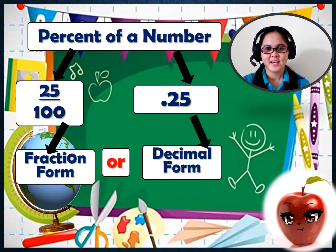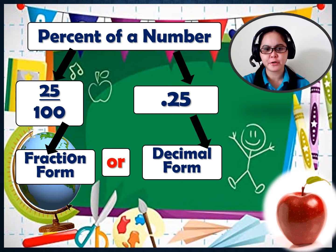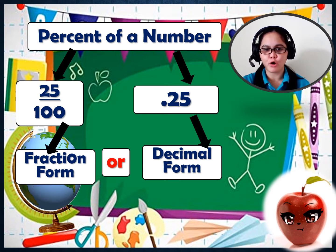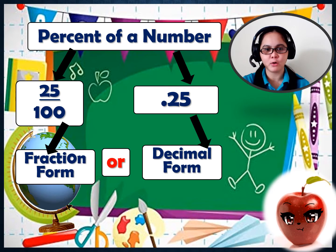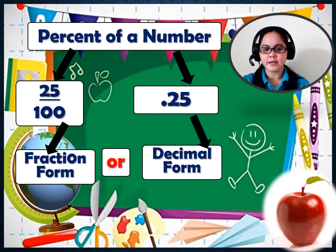In finding a percent of a number, we can use fraction form or decimal form. For example, 25% can be written as 25 over 100 in fraction form, or as .25 in decimal form.